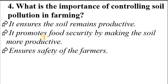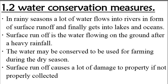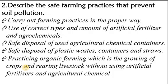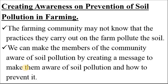Second, controlling soil pollution promotes food security by making the soil more productive. Food security, in simple terms, means food is available, people can access it, and it contains all the necessary nutrients — not just one type of food but nutritive food that people can access. Third, it ensures safety of farmers so that they do not consume spoiled food. That brings us to the end of our 15-minute lesson on how to create awareness messages about soil pollution. Thank you so much.